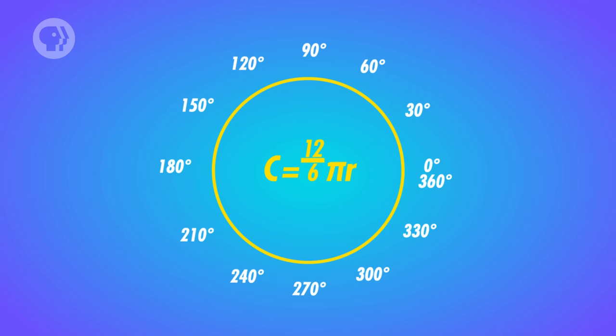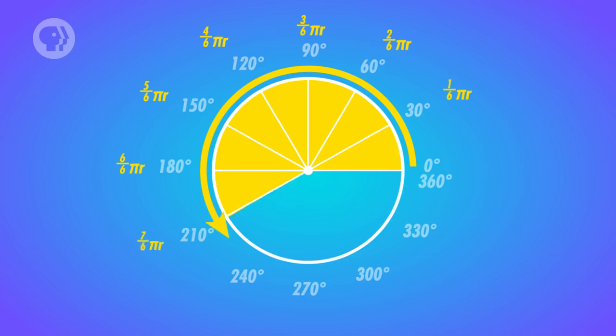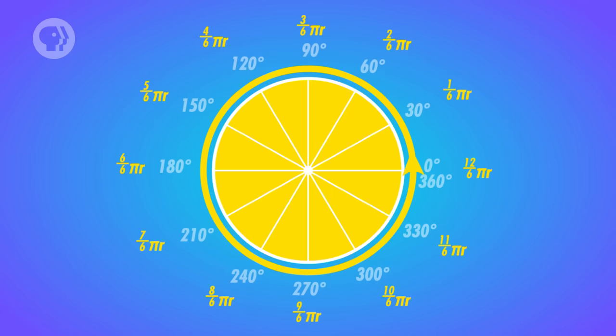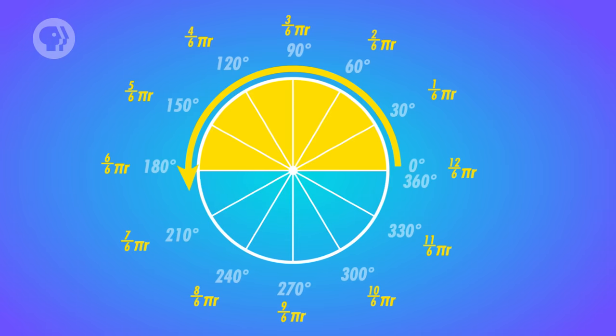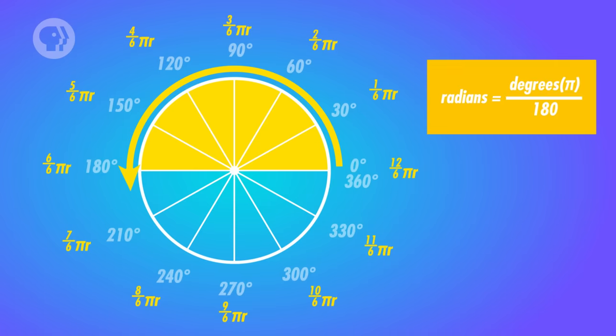Radians describe angles by essentially telling you how much of that circumference is covered by a given angle. So 360 degrees, which is a full circle's worth of angles, would be two pi radians. 180 degrees, or half a circle's worth of angles, would be pi radians. And to convert any number of degrees to radians, you just multiply the degrees times pi and divide by 180.